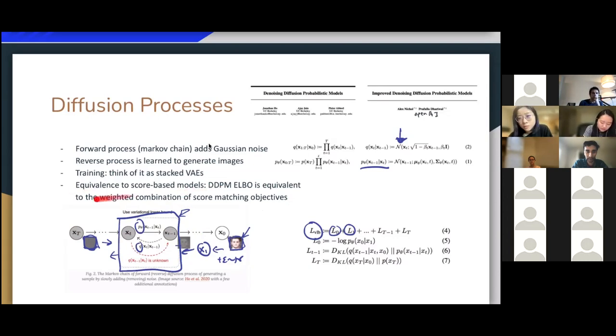Okay, so then the last thing I wanted to mention is this equivalence to score-based models. So this paper proved that this ELBO is equivalent to some of the score matching objectives, and also that they re-parameterized the diffusion model in a way that was inspired by Langevin dynamics, and this enabled performance breakthroughs on diffusion models. So it's pretty cool that these two angles came together and helped make some improvements.